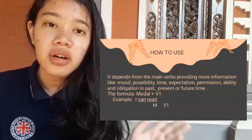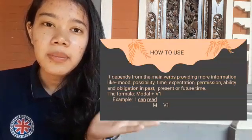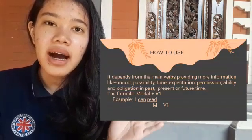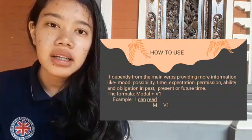How to use an auxiliary modal? You can follow this formula: modal plus verb 1. For example, 'I can read.' 'Can' is the modal and 'read' is verb 1. The modal depends on the main verb to provide more information like ability, willingness, obligation, theoretical possibility, mood, expectation, and time in the past, present, or future.